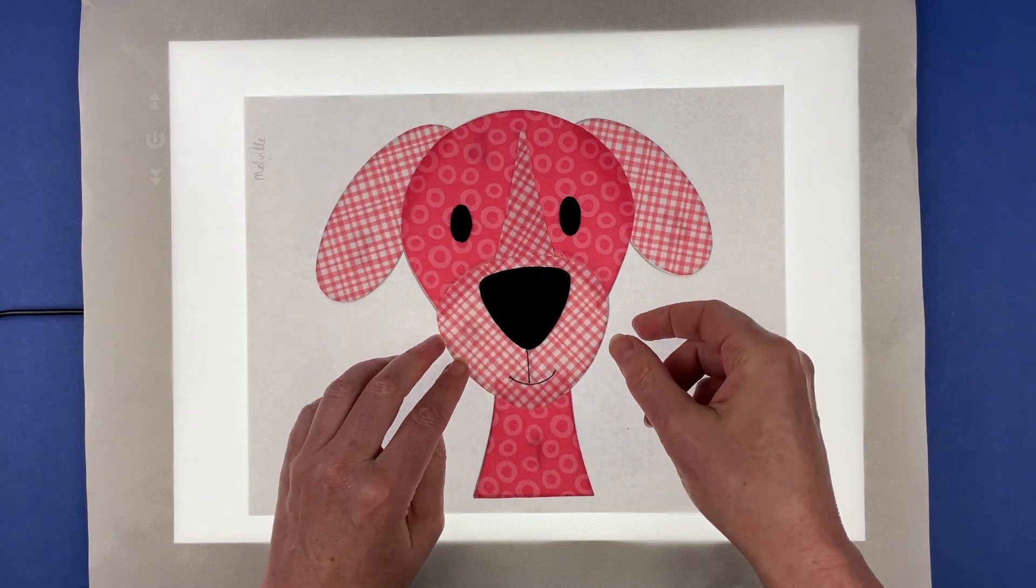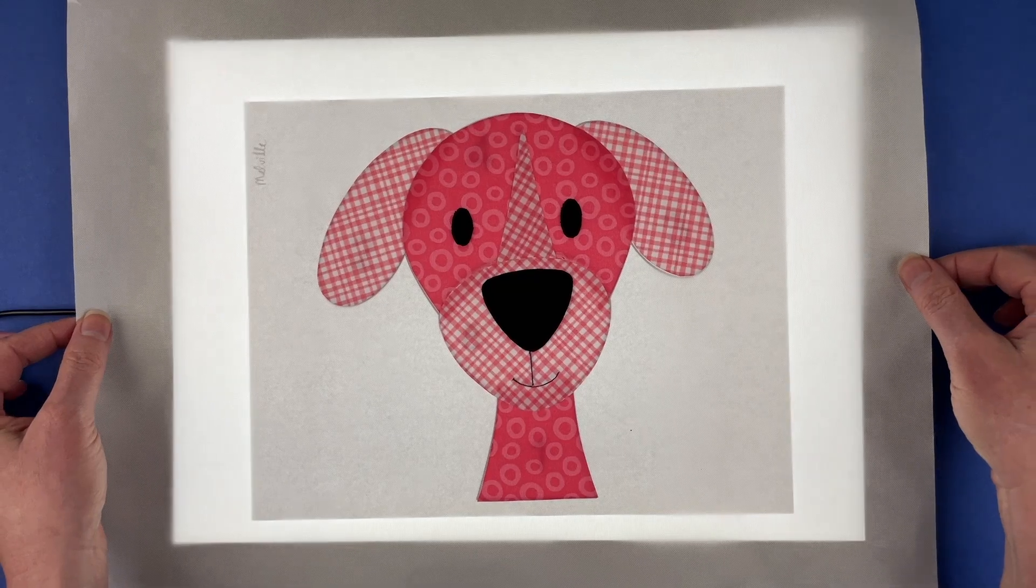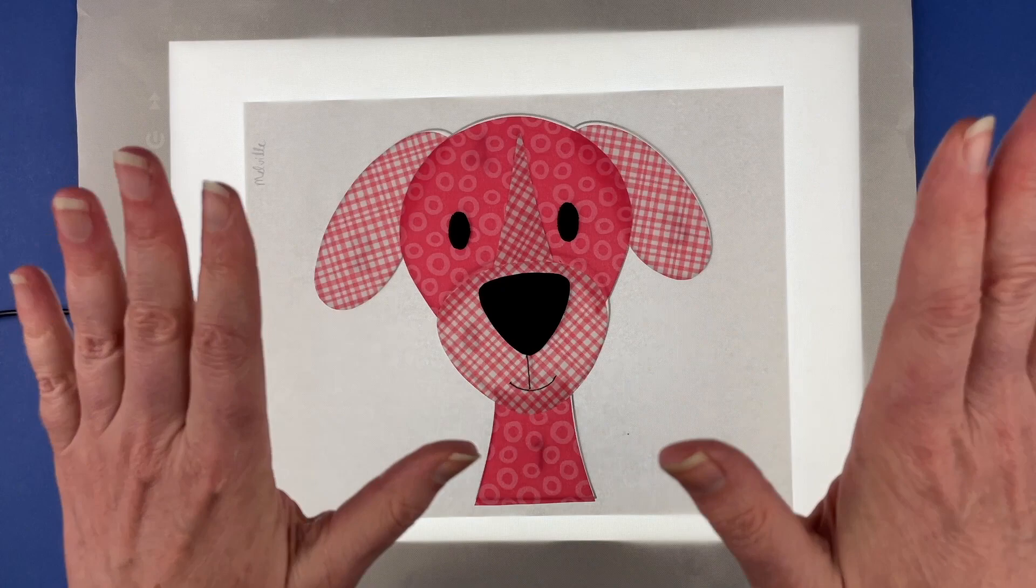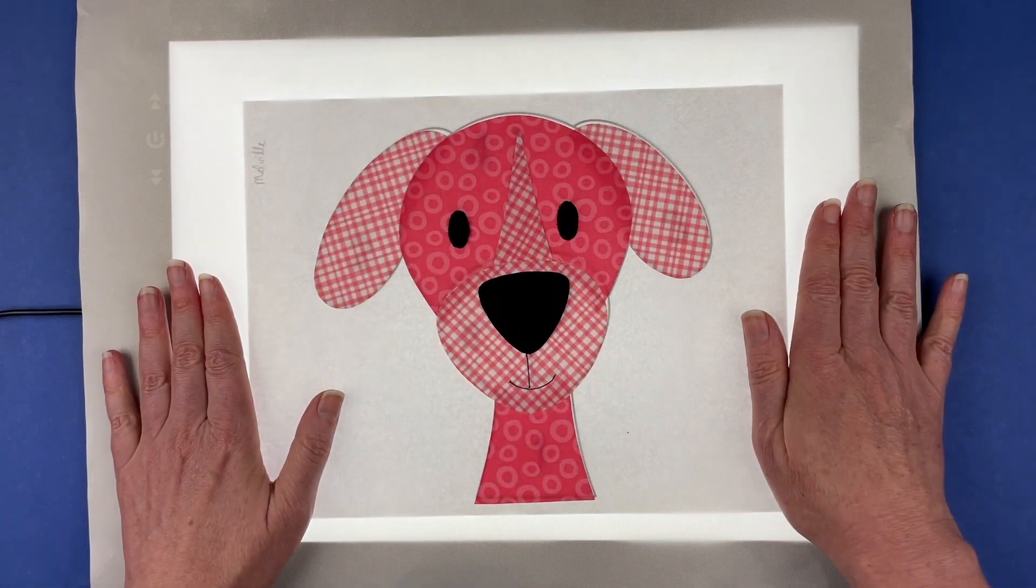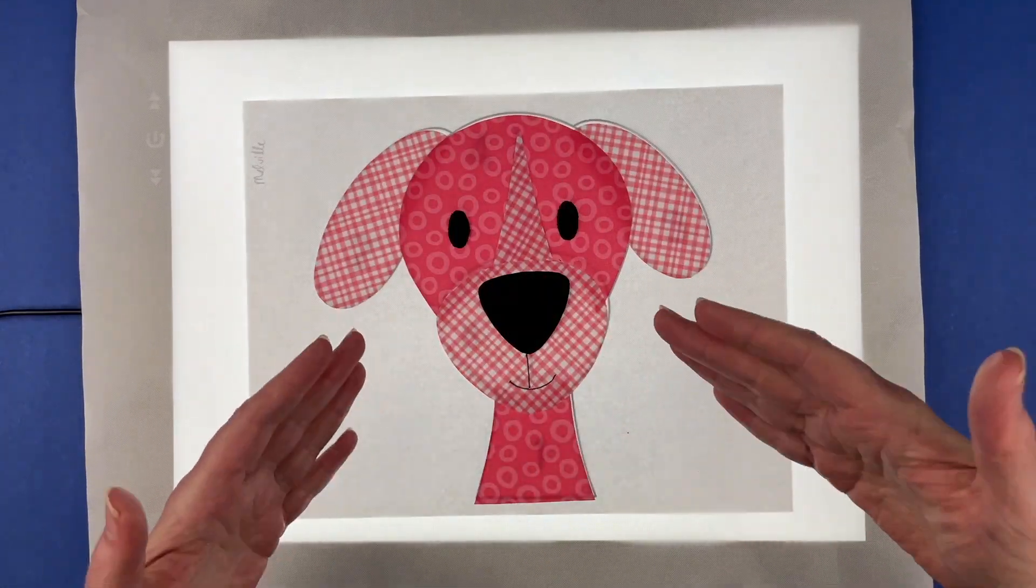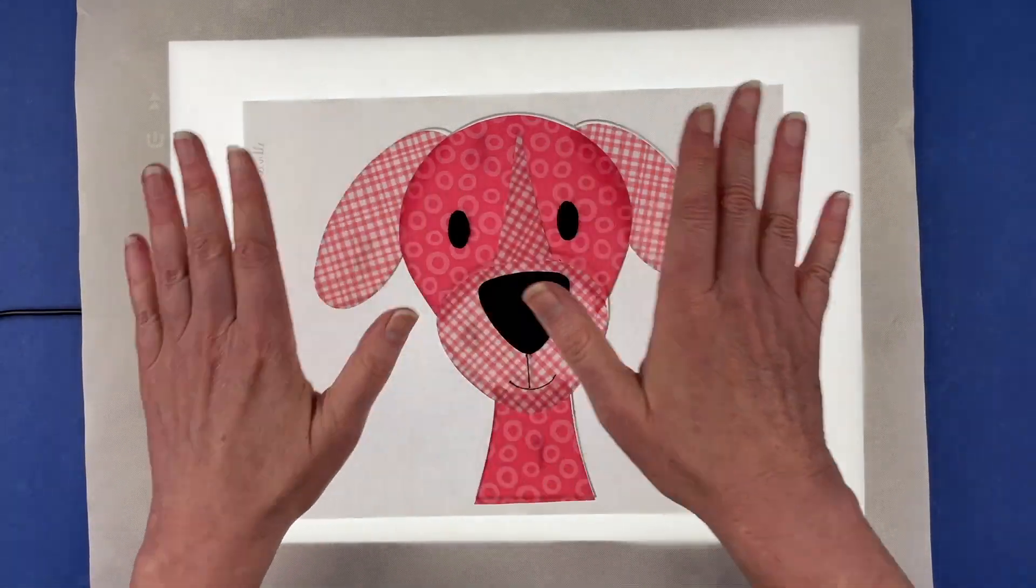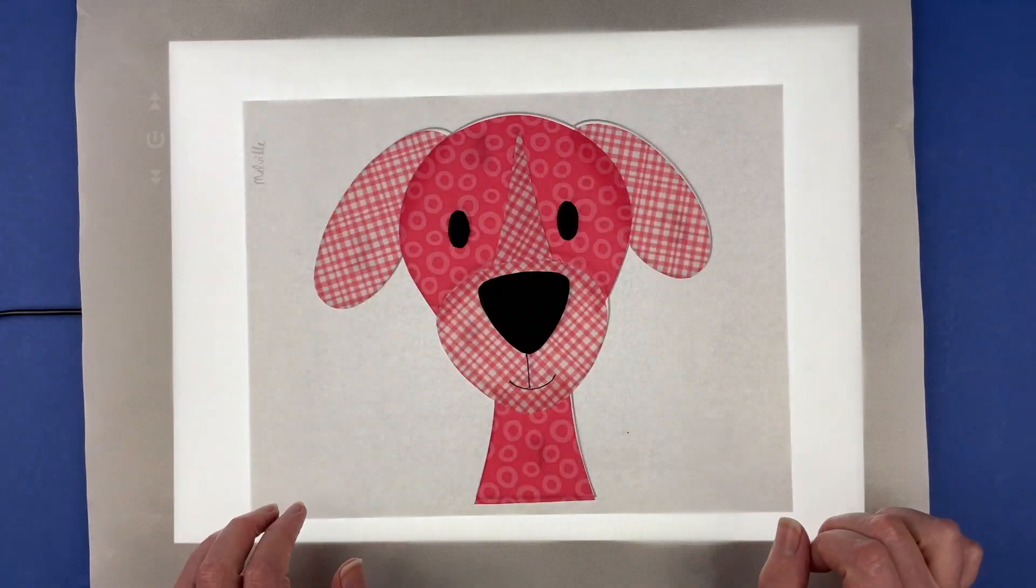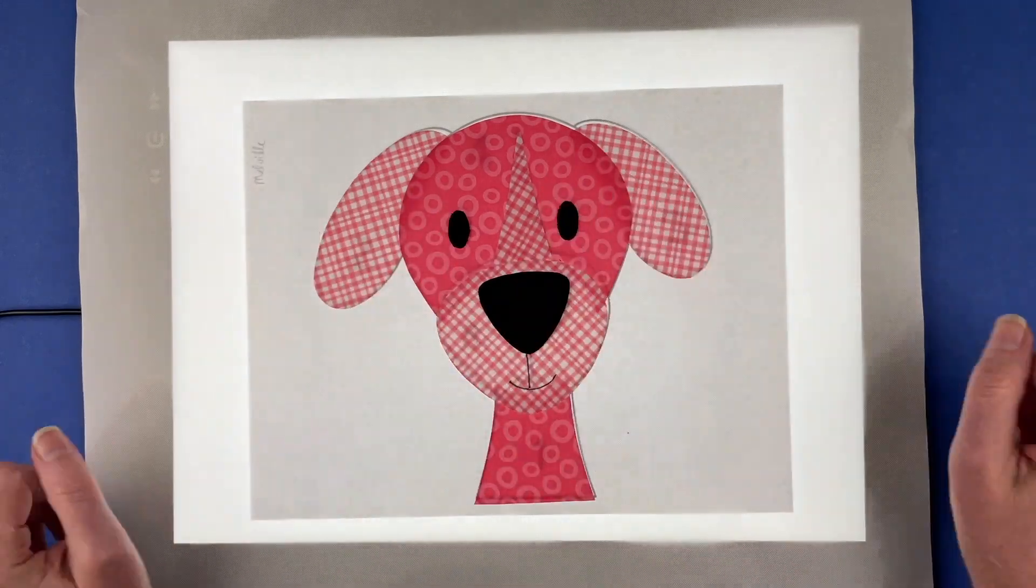Now I am going to carefully lift the silicone mat off of the light board, and I'm going to take this over to my ironing board. Then I'm going to fuse all of this into place right on the silicone mat, let it cool, and then peel it off. Then that whole face acts like a single iron-on transfer, and then I will transfer it to the background block, fuse it down again, then do all of the outline stitching.